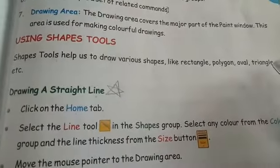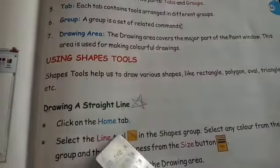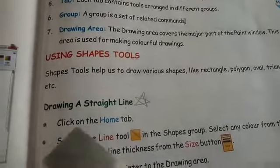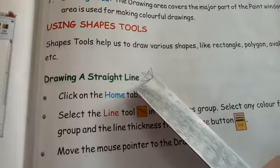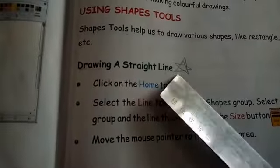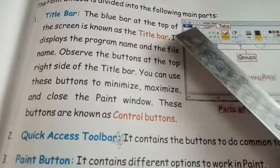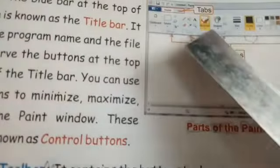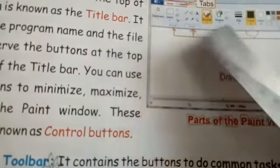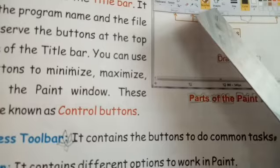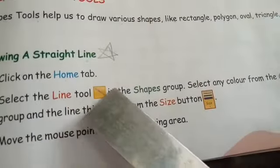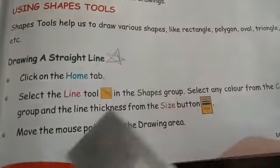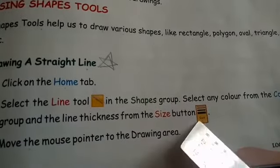Now, using shapes tools. Shapes tools help us to draw various shapes like rectangle, polygon, oval, triangle, etc. You will be getting so many shapes tools. If you are going to draw a straight line, you have to go to the home tab and then use the shapes tool. After clicking on it, you will get so many shapes. In the first row you will get the line tool.